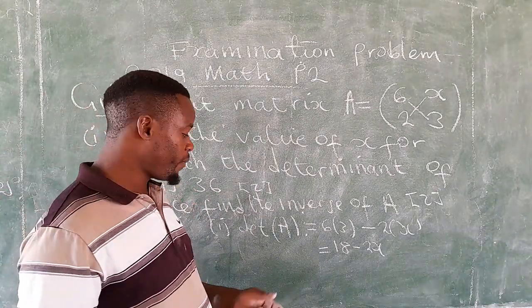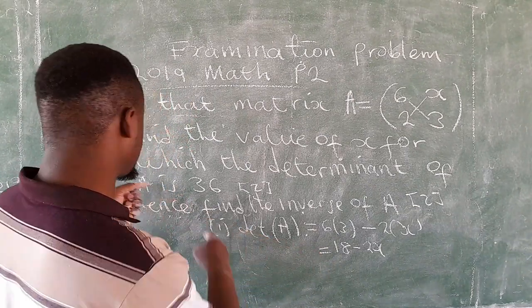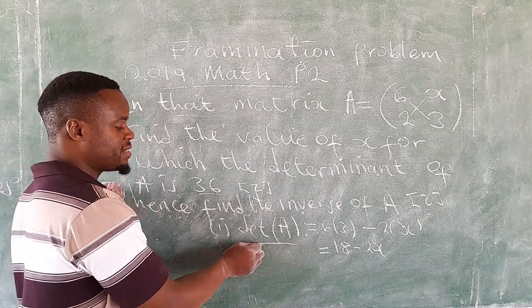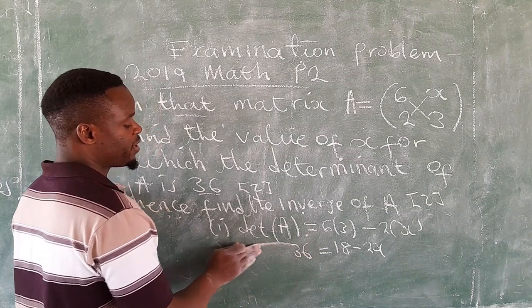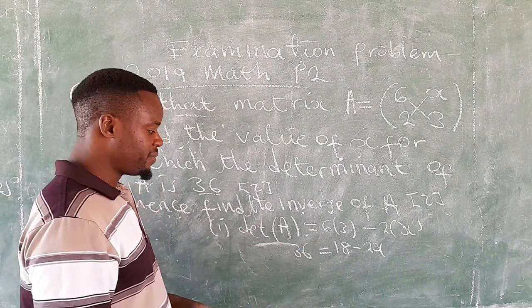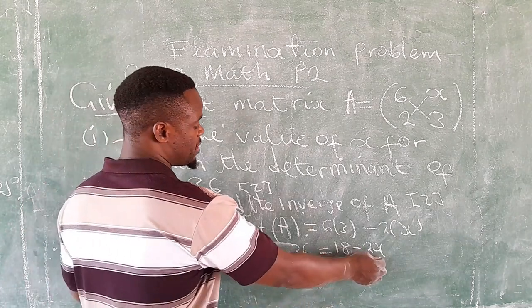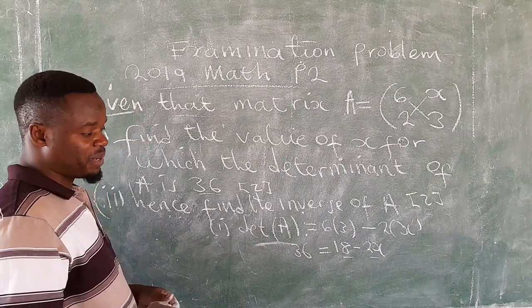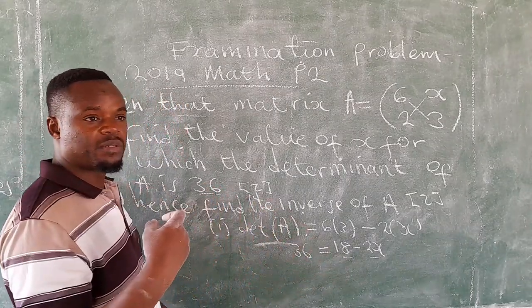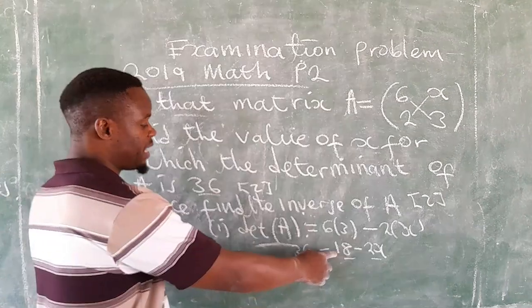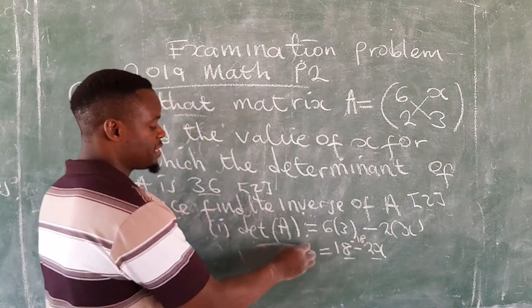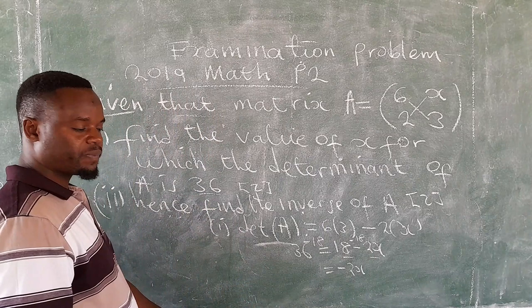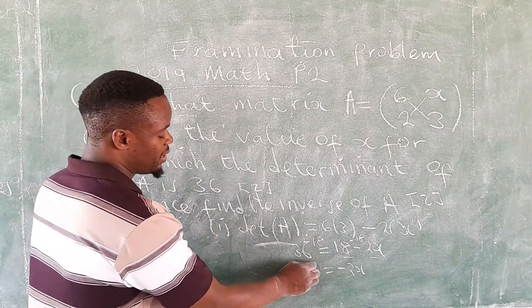Now here we've already been given the determinant. We're told the value for which the determinant of A is 36, so we're going to write 36. When you look at what we have here, you notice that this and that term are like terms, so we can't execute the subtraction. What we do is we introduce the additive inverse of 18. So here we're going to have minus 18, even this side minus 18. So we're going to remain with 0 minus 2x, then this side you're going to have 18.